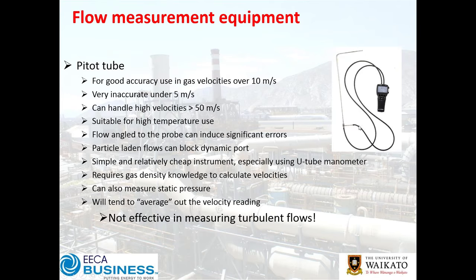A pitot tube is generally good over 10 m/s and increasingly inaccurate under 5 m/s. It's good for high temperatures and high velocities provided your DP cell can handle the pressure. Particle-laden flows can block the dynamic port and give a poor reading. You need to know a lot about gas density for flow calculations. It can also be used to measure static pressure, which is useful. The pitot tube gives a time-averaged flow reading rather than an instantaneous turbulent flow reading.